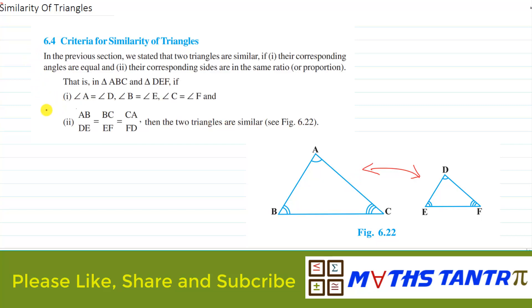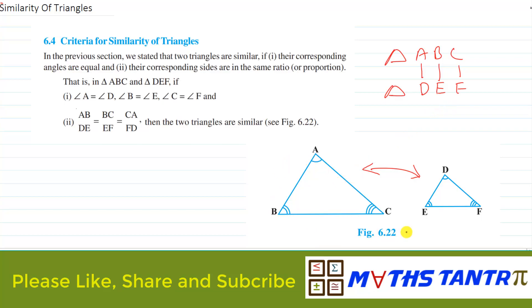If we have triangle ABC and triangle DEF, and their corresponding angles are congruent — that means angle A equals angle D, angle B equals angle E, and angle C equals angle F — then these two triangles are called similar triangles by using the angle-angle-angle property, or AAA criteria.